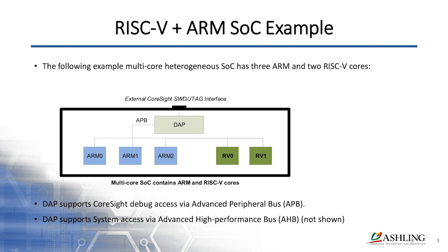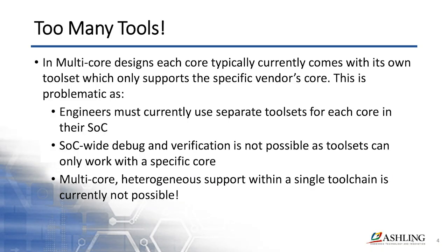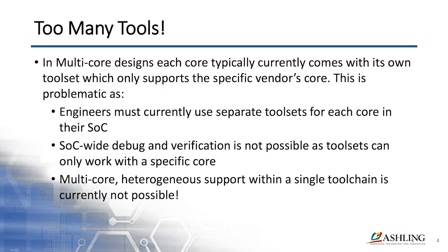So the SOC we're looking at here has ARM cores and RISC-V cores. Obviously if you buy a toolchain from ARM, you're not going to have RISC-V support. What tends to happen with these heterogeneous cores is that multiple toolchains are needed for each particular core. The toolchains are almost sandboxed from each other, and obviously this is problematic because it means the engineers need to use multiple toolchains — you can't develop within a single environment. When you come to debugging, this is also problematic because in an SOC, you want to be able to debug the interaction between cores and CPUs, seeing data transferring between them.